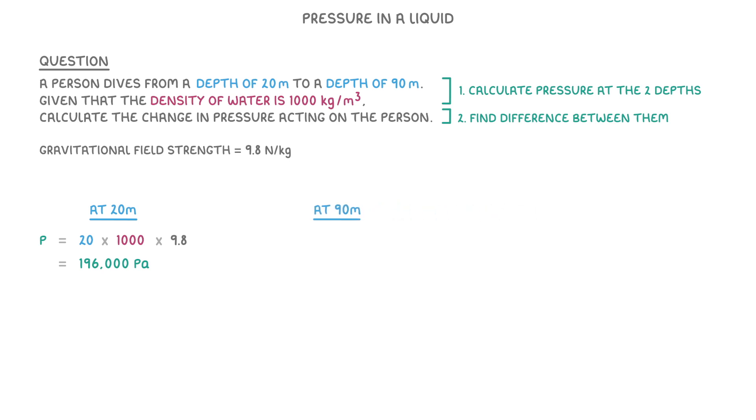Meanwhile, for 90 meters, we do 90 times 1000, times 9.8, which gives us 882,000 pascals.